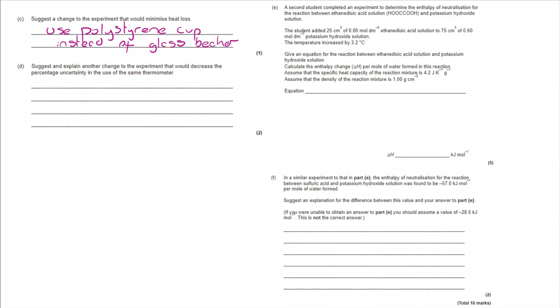Moving on to part D, suggest and explain another change to the experiment that would decrease percentage uncertainty. Now, if we consider uncertainty on any apparatus on a thermometer, it might be plus minus 0.15 degrees C. That means whatever value I read, it could be one and a half degrees below that or one and a half degrees above. Now, if we want the percentage uncertainty to be lower, we want that 1.5 to be measured against a much bigger temperature range. So the way we deal with it is we get an increased magnitude of temperature change.